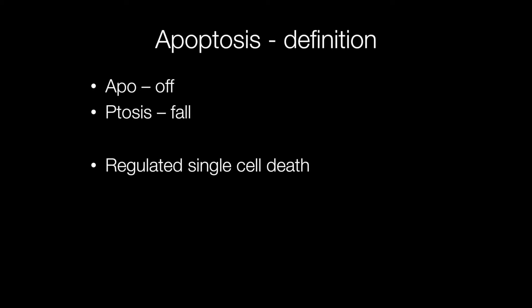The word apoptosis is derived from two words. The first is 'apo' meaning 'off' and the second is 'ptosis' meaning 'fall' — the same ptosis that describes a droopy eyelid. So apoptosis is when a cell falls off or falls out. This also explains why it is pronounced 'apoptosis' and not 'apoptosis.' In the most simple terms, apoptosis is a form of regulated single cell death.